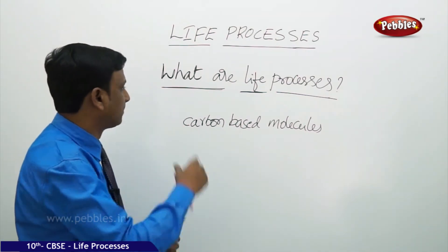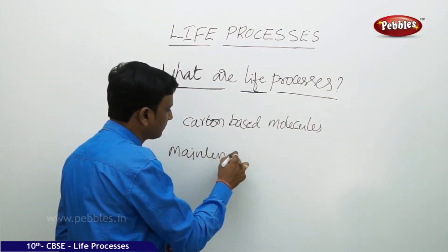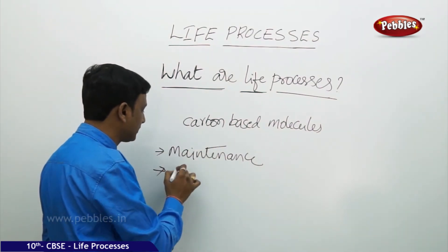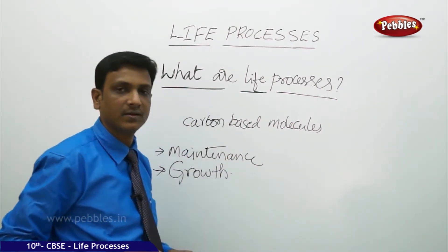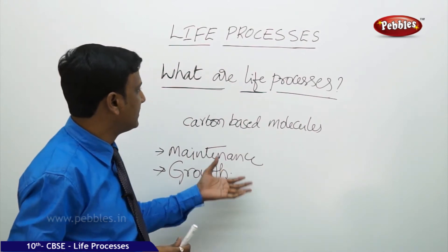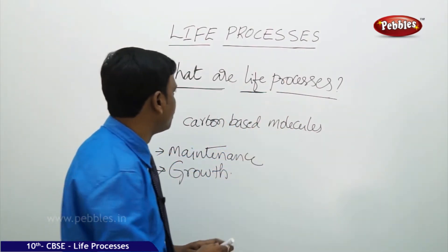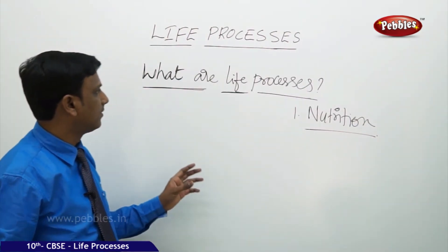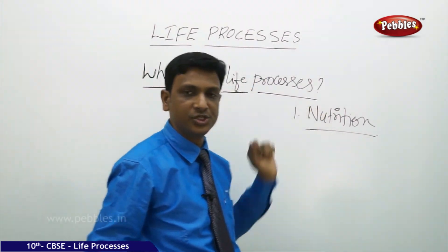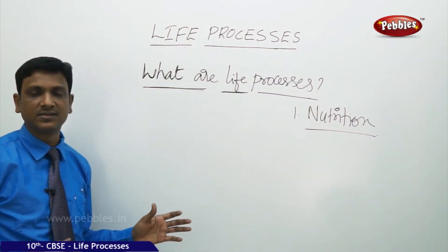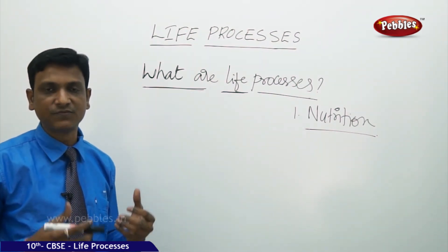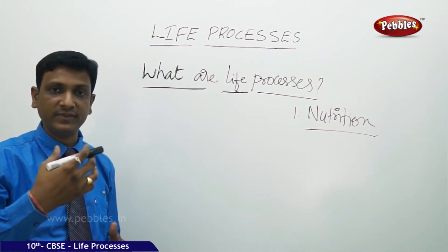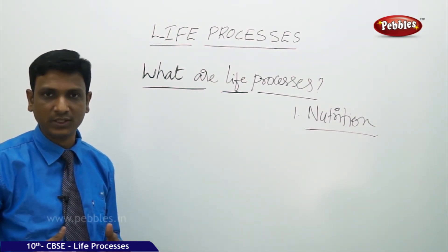This supply is done by the process of nutrition. The raw materials serve two main purposes: first, maintenance — the repair and maintenance of our body, for which energy is supplied in the form of chemical molecules; and second, growth. So we have identified one important life process: nutrition, through which living things obtain the necessary materials from the environment.